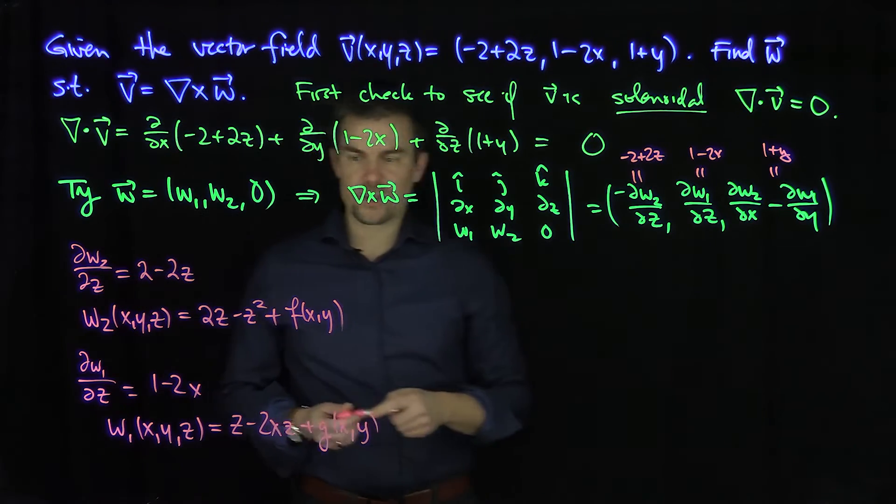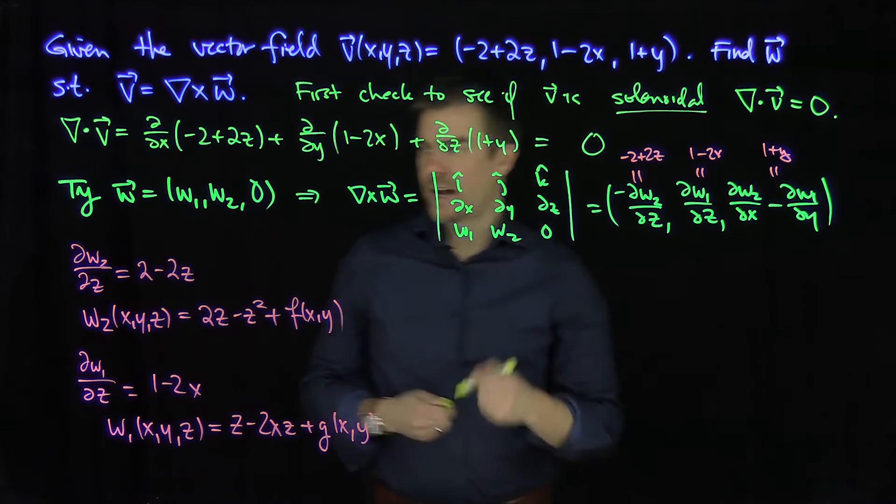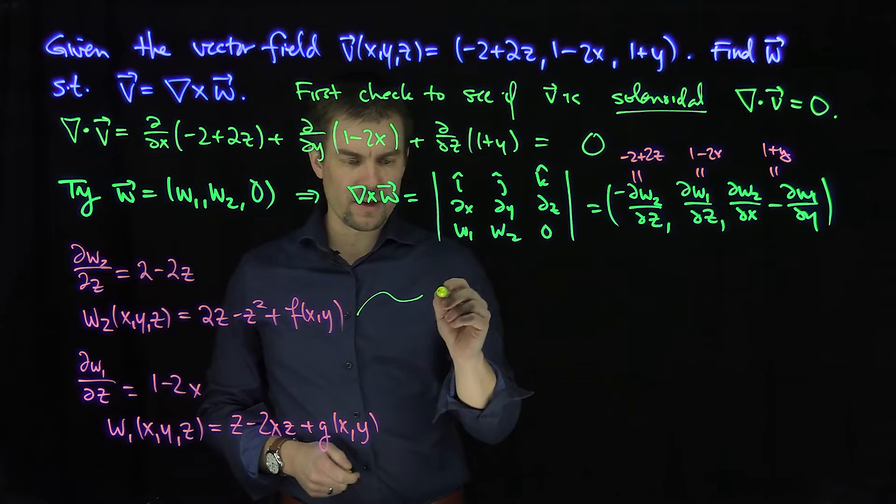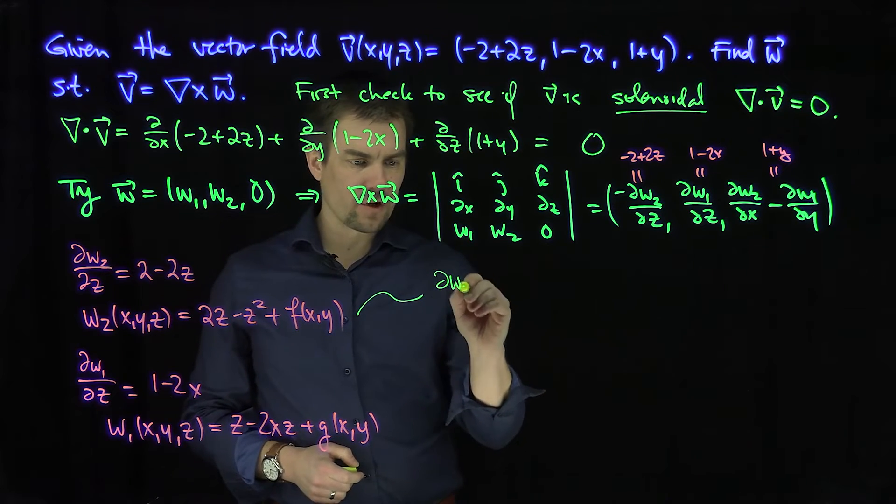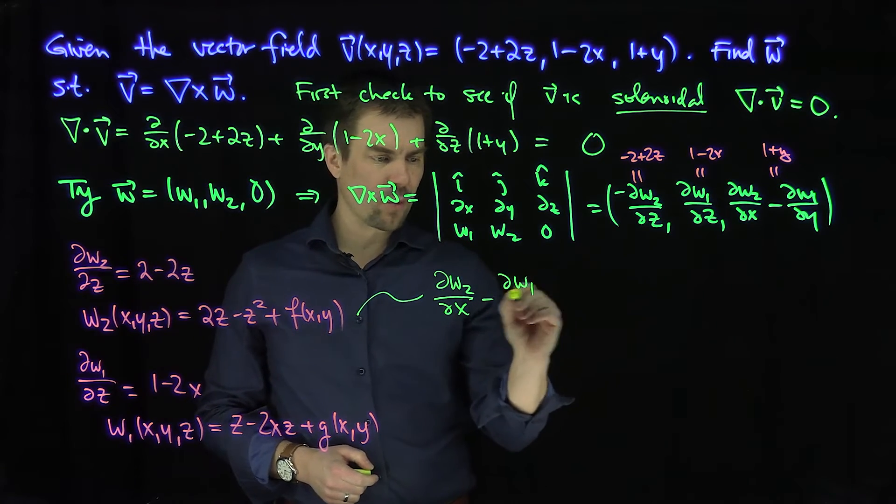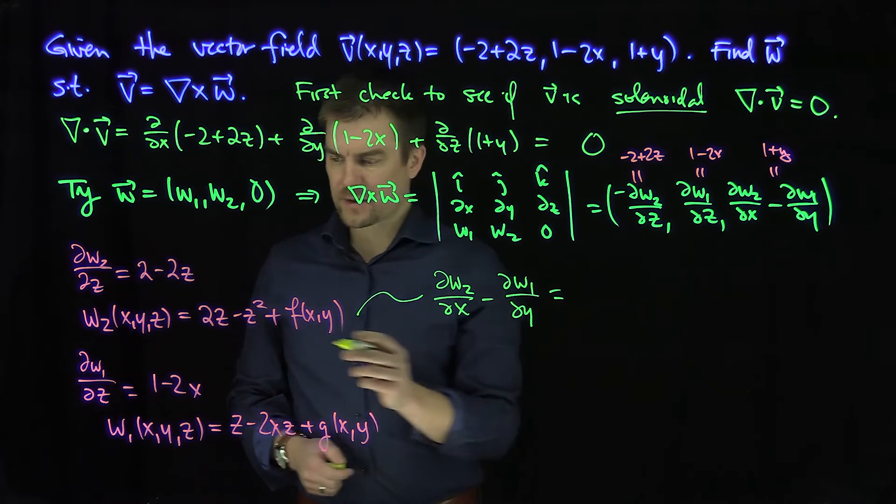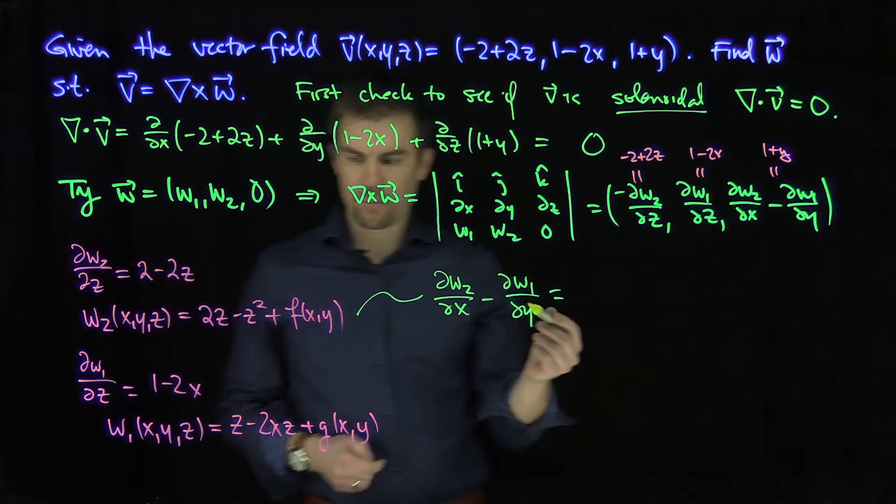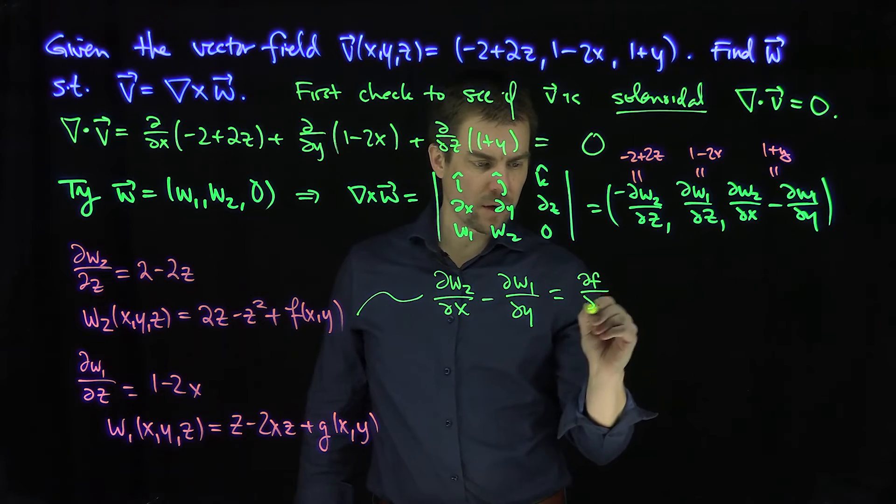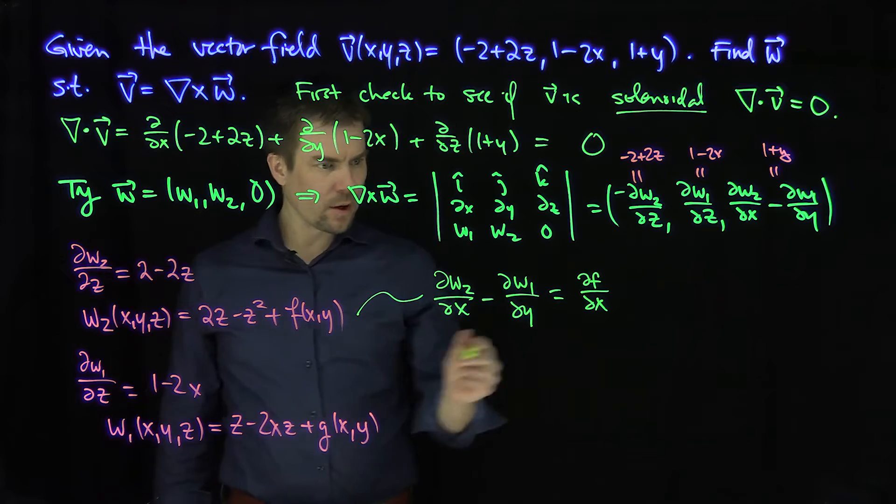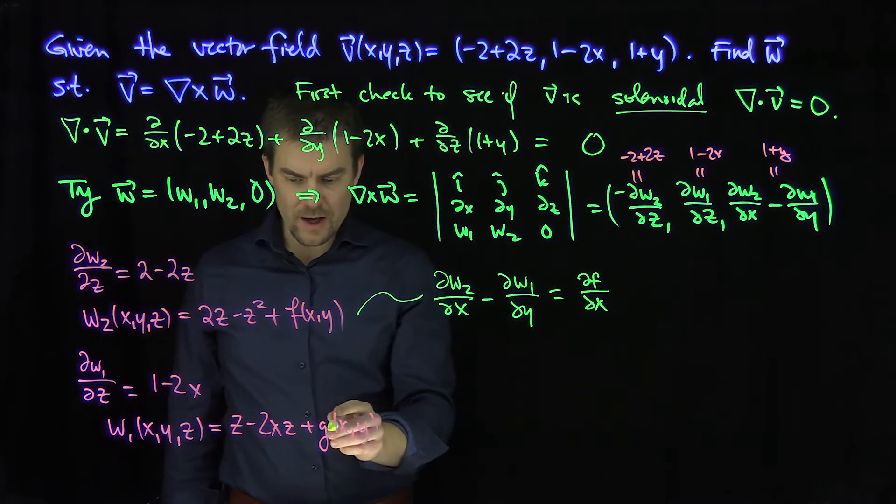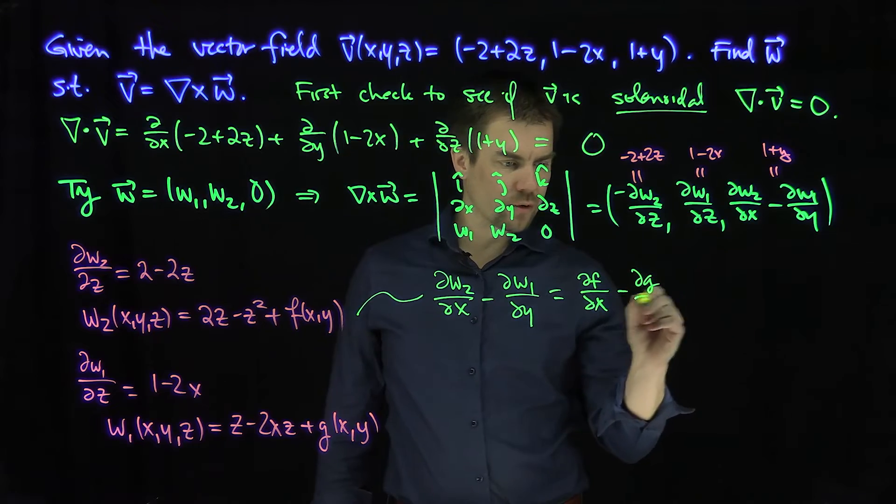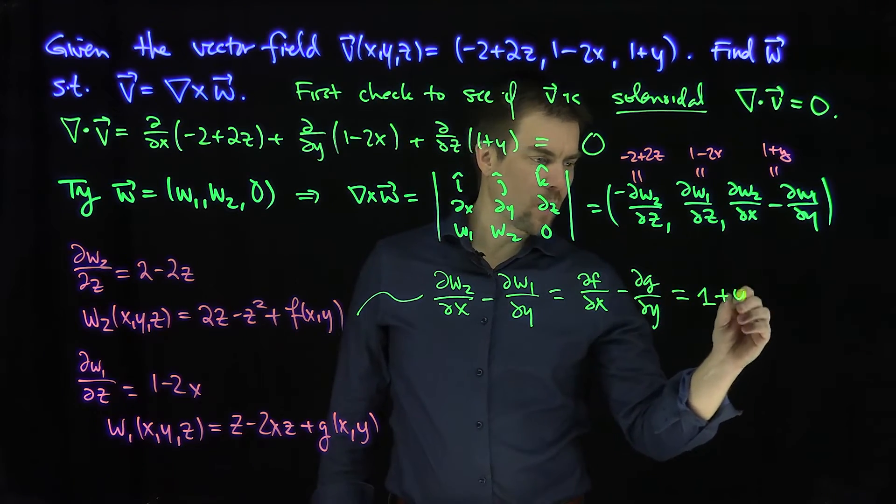And now I use my final condition to test the consistency of this. So now I need partial w2 partial x minus partial w1 partial y. Partial w2 partial x is going to be just partial f partial x. And then partial w1 partial y is just going to be minus partial g partial y. This has to be 1 plus y.